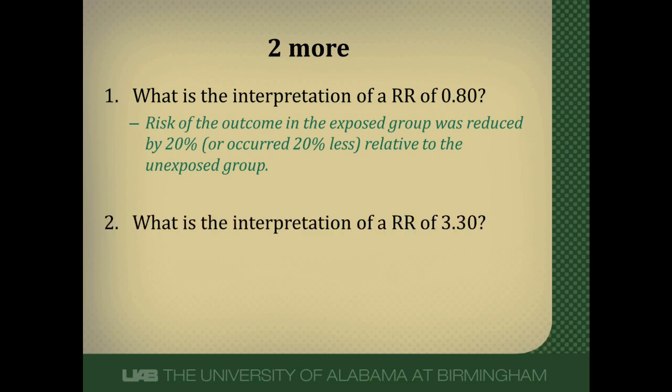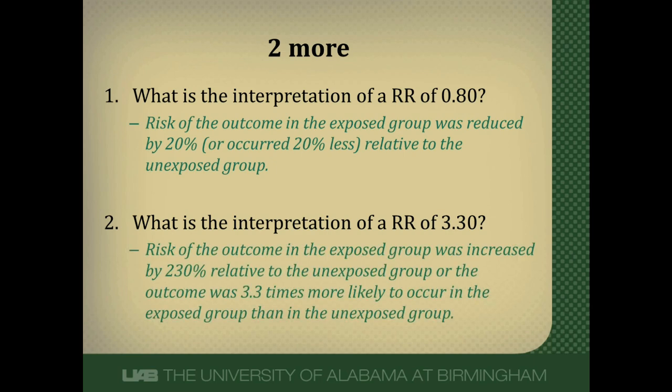How do you interpret a relative risk of 3.3? The risk of the outcome in the exposed group is increased by 230% relative to the unexposed group. An alternative interpretation is that the risk of the outcome is 3.3 times greater in the exposed group relative to the unexposed group. Using that formula — 1 minus relative risk — gives you the 230%.